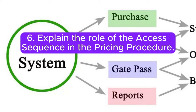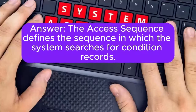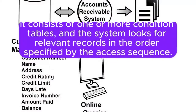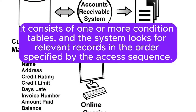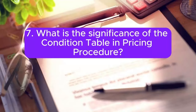Question 6: Explain the role of the access sequence in the pricing procedure. Answer: The access sequence defines the sequence in which the system searches for condition records. It consists of one or more condition tables, and the system looks for relevant records in the order specified by the access sequence.